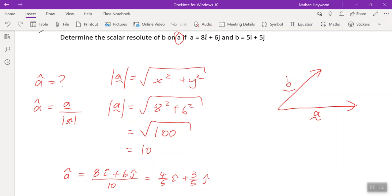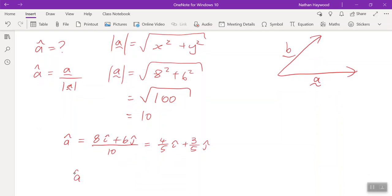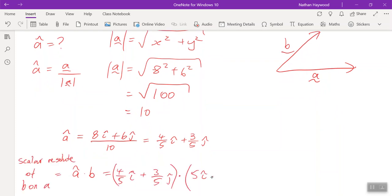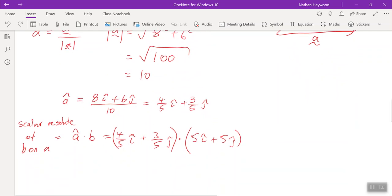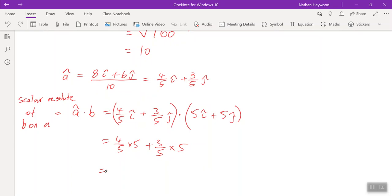So now the scalar resolute of B on A, what do we do? Do the dot product of A and B. So we do X1 times X2, or the X of A times the X of B, plus the Y of A times the Y of B.